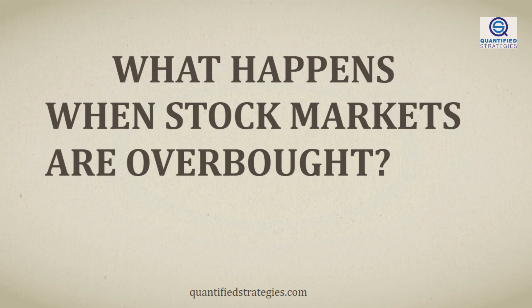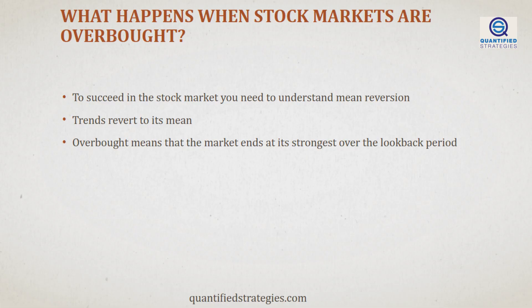To navigate the market's complexities, you must grasp the principle of mean reversion — the main principle to understand the term overbought. In statistical terms, this means that strong deviations from the trend will eventually revert to the mean and move in the opposite direction. When we say weaker, we mean in comparison to the previous period.